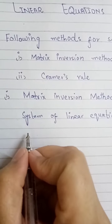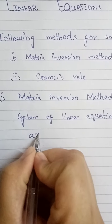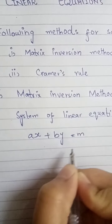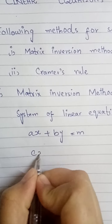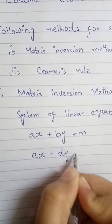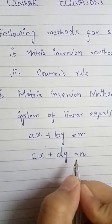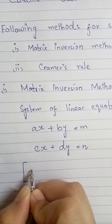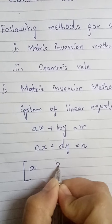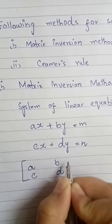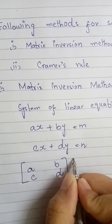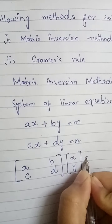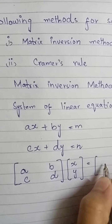Consider a system of linear equations. We have two equations: the first one is Ax plus By equal to M, and the second is Cx plus Dy equal to N. Now from these, we extract the coefficient matrix, the variable matrix, and the constant matrix.